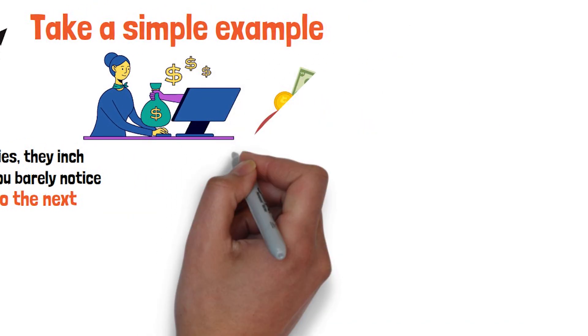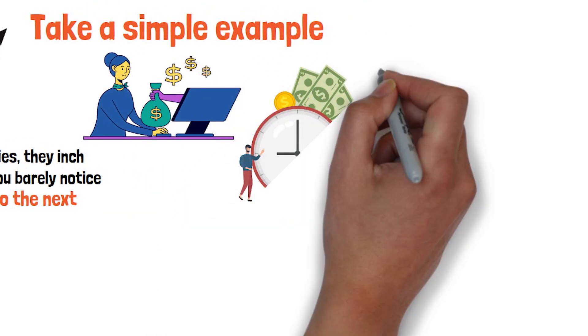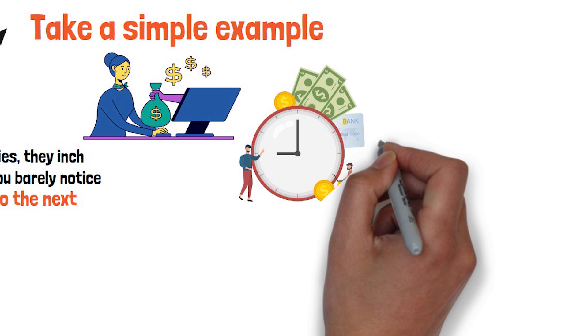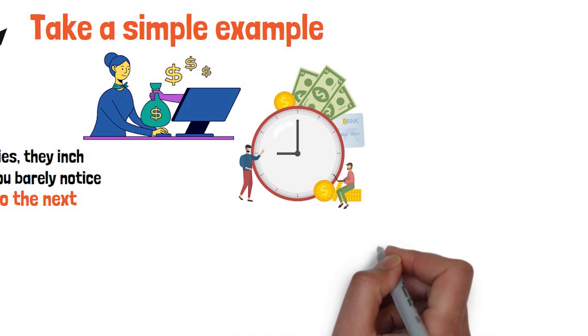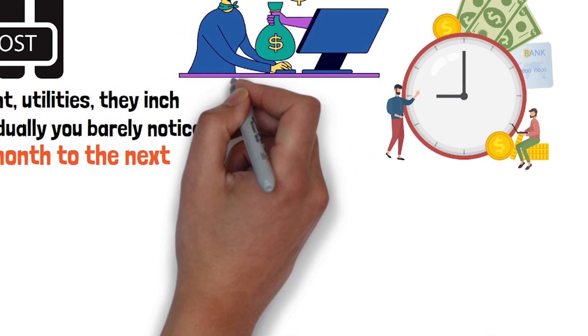But over time, the change is impossible to ignore. The $50 that once filled a shopping cart now only covers a week's meals. Your bank balance may be climbing, but the amount of real-life value it represents keeps shrinking.